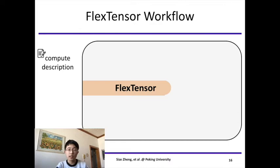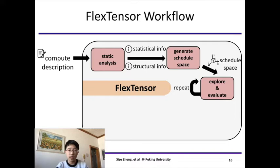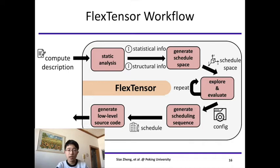The workflow of FlexTensor is composed of five components. The first, Static Analysis, takes the compute description as input and extracts statistical information and structural information from the description. The statistical and structural information is used by the second part to generate schedule space. Then, the third part explores the schedule space and evaluates different schedule configurations. The final result of searching is a highly optimized schedule configuration, which is used to generate final schedules. And the last part generates source code according to the final schedule. In my presentation, I will focus on three components: the schedule space generation, the exploration, and the schedule generation.